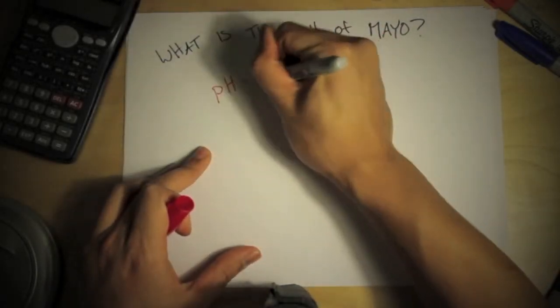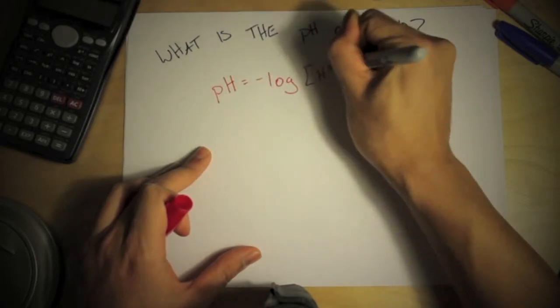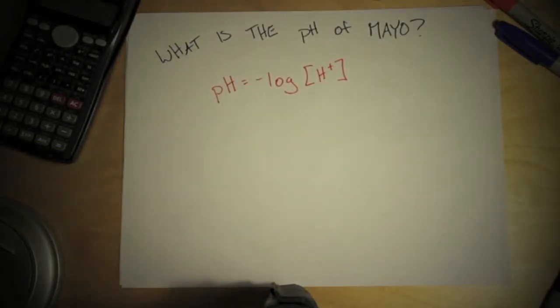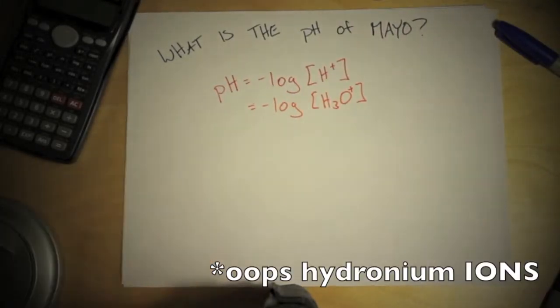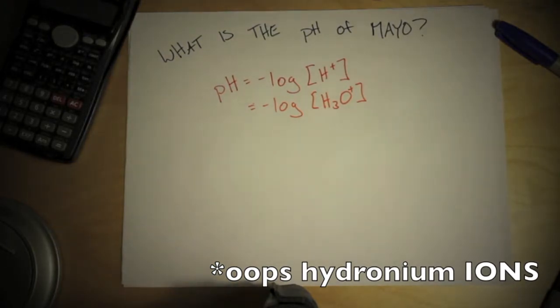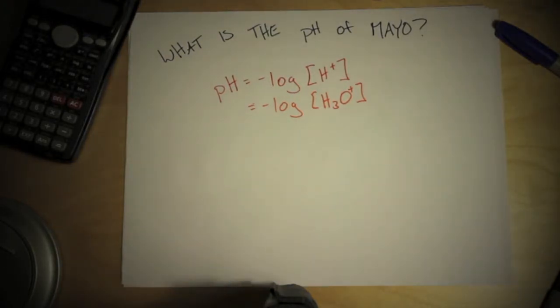pH very strictly is the negative log of the concentration of what I'm going to call hydrogen atoms. Now depending on how you studied chemistry, sometimes it's also called the negative log of hydronium atoms. Either way, I'm going to call it the concentration of things that make things acids.